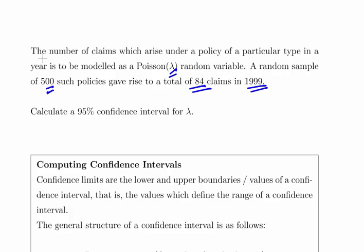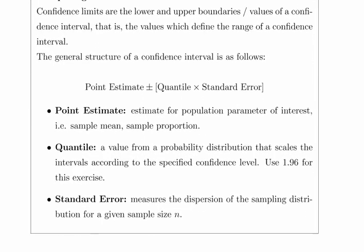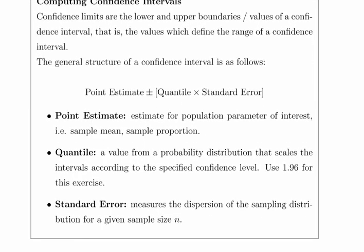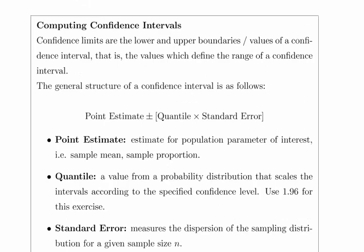The first thing I'm going to remark upon is that we still use the standard structure of a confidence interval: the point estimate, which is our estimate for lambda, plus or minus the quantile times the standard error.